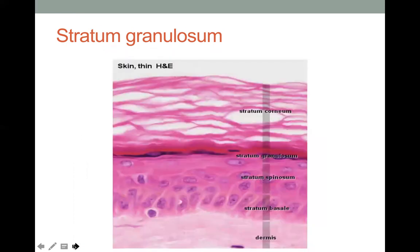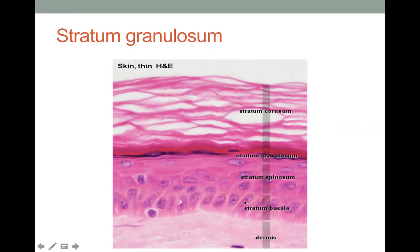Looking at a histological image of thin skin — identified because it lacks stratum lucidum — you can see the stratum basale at the base, then the stratum spinosum as a thin layer, and the stratum granulosum with its keratohyaline granules and lamellar granules still present.